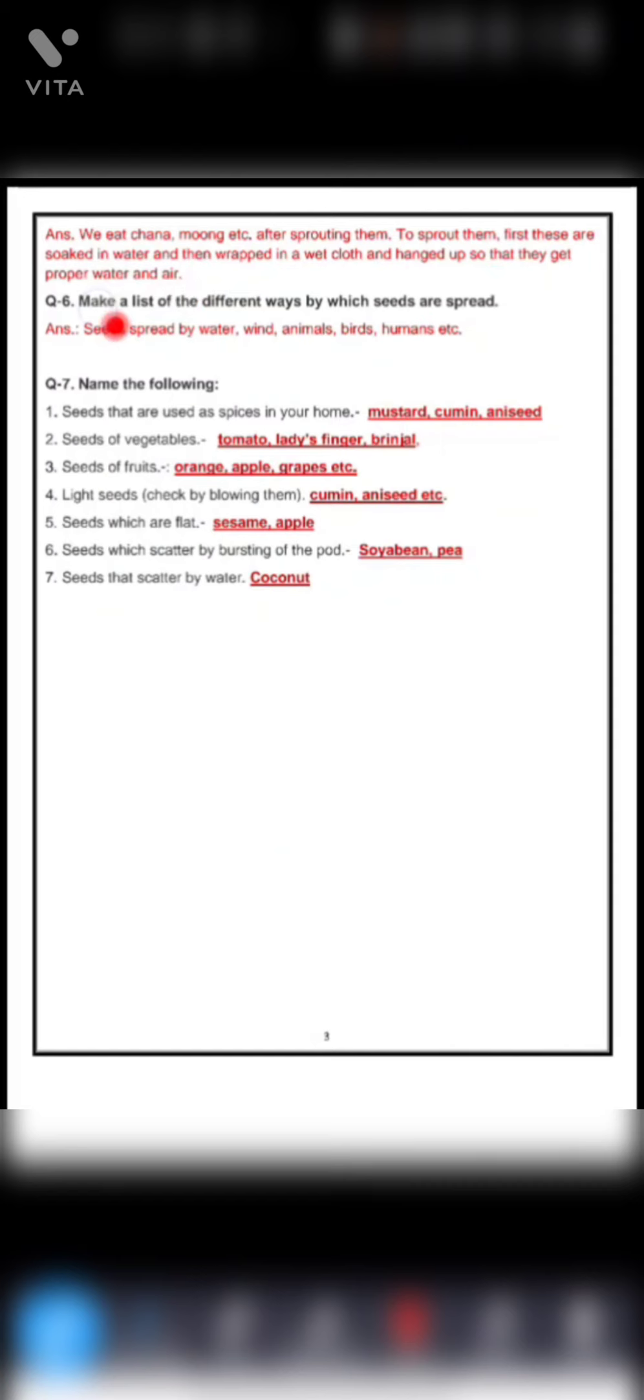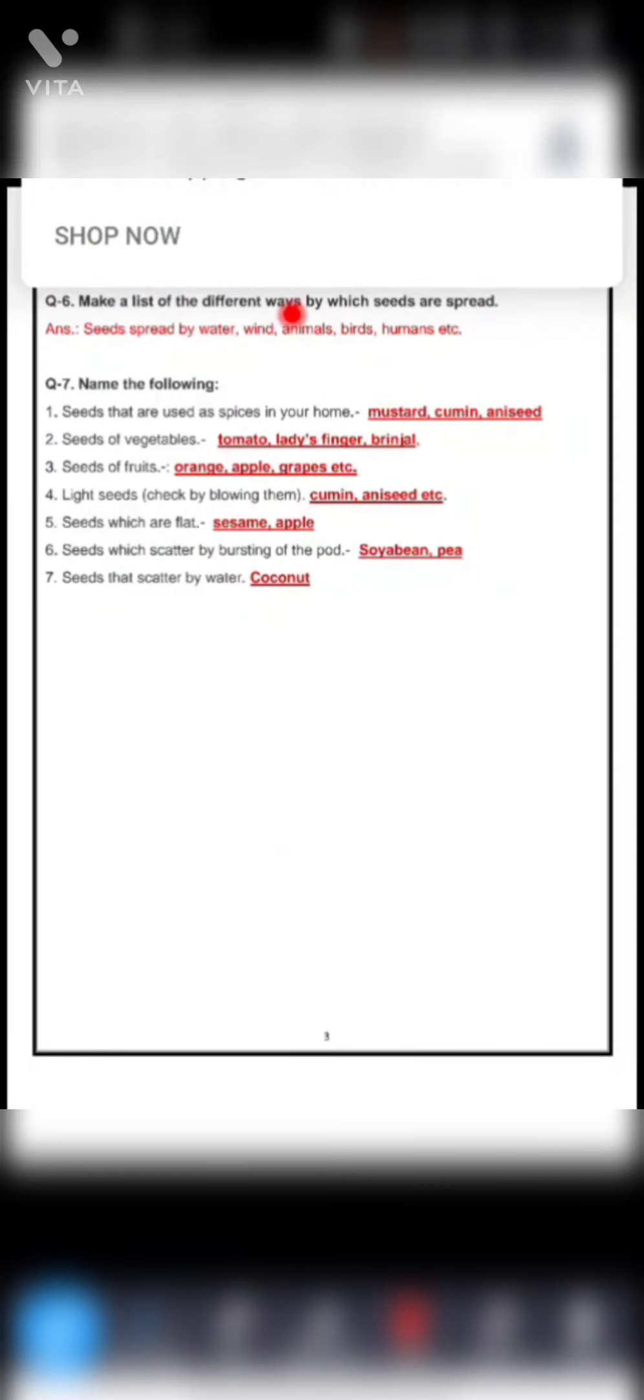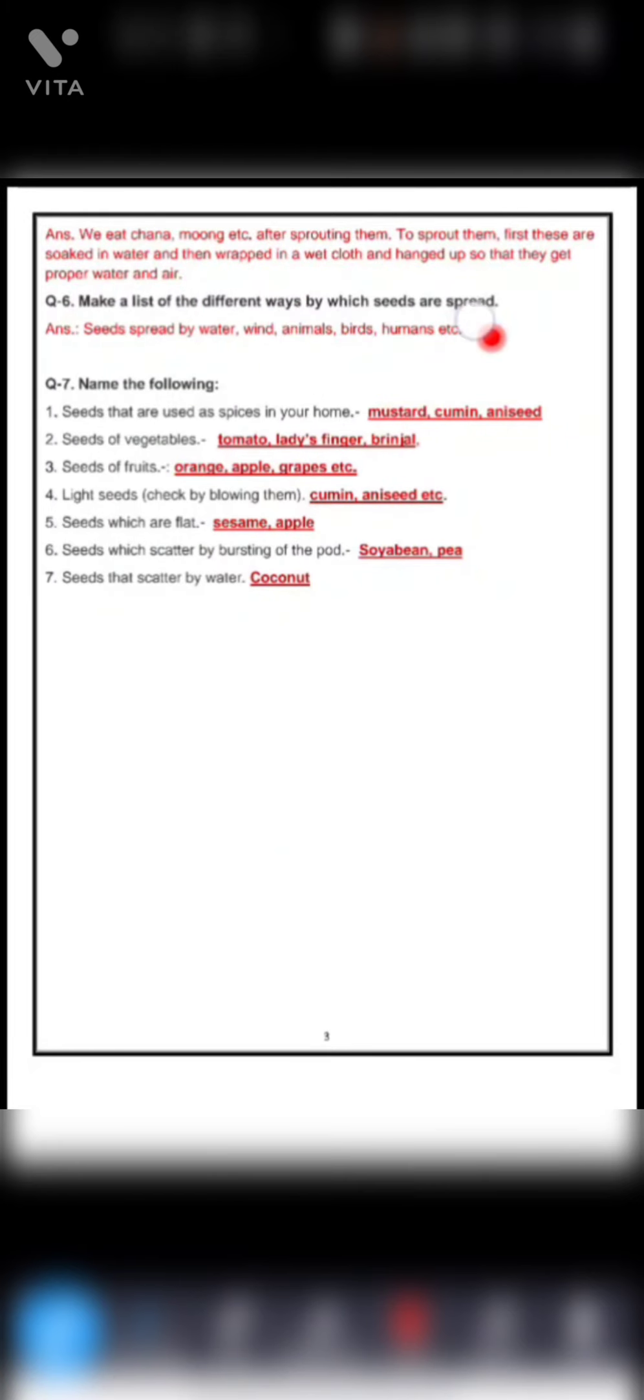Question number six. Make a list of the different ways by which seeds are spread. The answer is seeds spread by water, wind, animals, birds and humans.